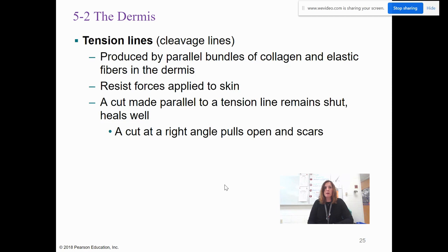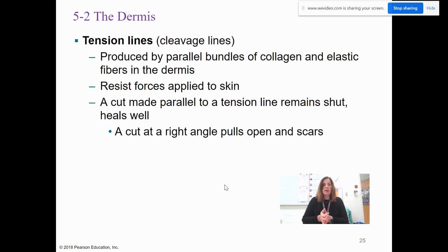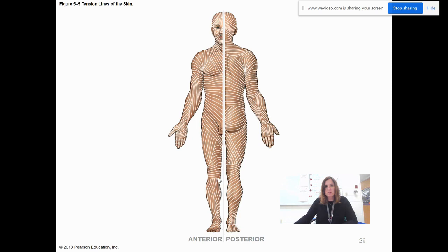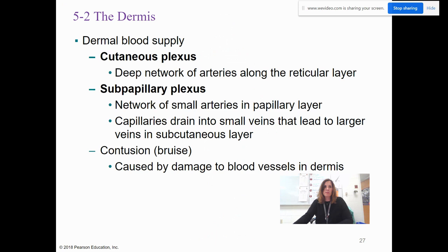Tension lines are known as cleavage lines. These are produced by parallel bundles of collagen and elastic fibers in the dermis, and they resist force applied to the skin. In surgery, it's ideal for incisions to be parallel to these tension lines — if an incision is at a right angle, you'll have more scarring. For example, knee surgery cuts are often made along the midline, which is why you see characteristic scars.